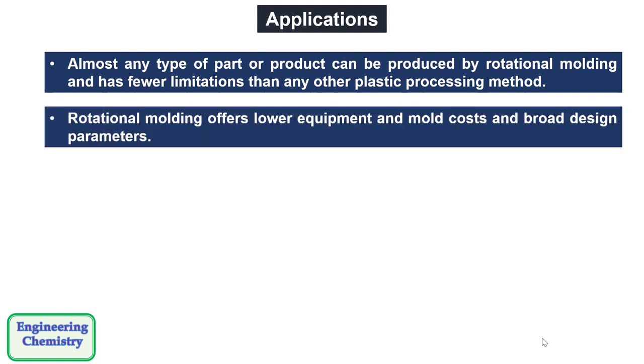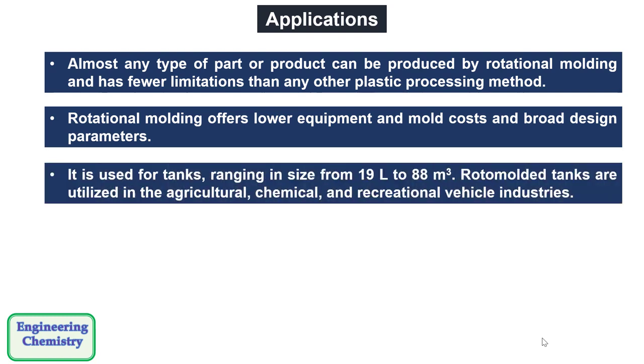Rotational molding offers lower equipment and mold cost and broad design parameters. It is used for tanks ranging in size from 19 liters to 88 meter cube. Rotomolded tanks are utilized in agricultural, chemical and recreational vehicle industries.